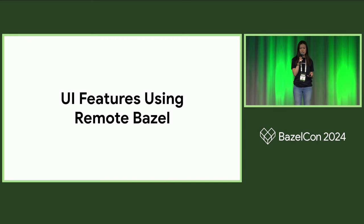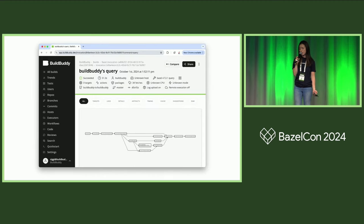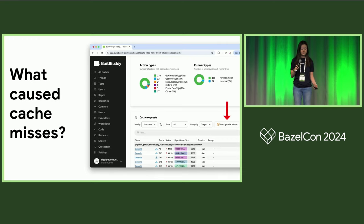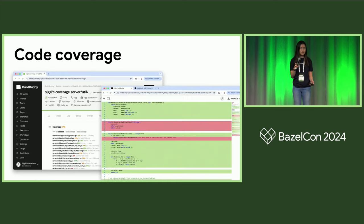Now that a web browser can essentially run a Bazel command, this also lets us build a lot of really cool UI features to solve common customer pain points. A common question of Bazel users is: why did this seemingly unrelated target build? So we added a button that runs a Bazel query from the UI so that you can visualize the dependency graph between two targets. Another common question is: what caused cache misses between these two builds? So we added a button that runs bb explain, which compares the compact execution logs of two builds to highlight the root cause of what changed and what it invalidated. Or maybe you have a test invocation and you want to see code coverage — you can now initiate your coverage command directly from the UI.